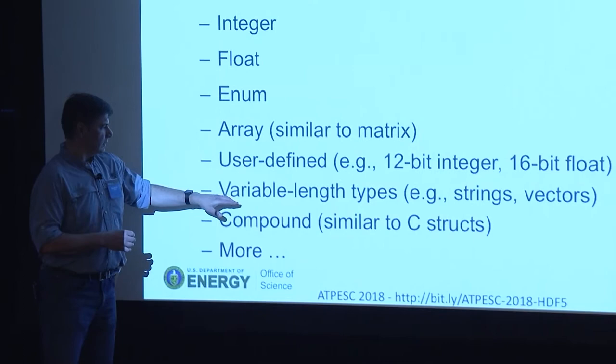A caution about variable-length types: we support them just fine, but it's never been a focus on HPC. They work, but they're slow and not particularly good on HPC systems. If you're thinking of storing a four-gigabyte array of strings, it's probably not a good idea to begin with, and it won't do I/O super fast. For structs, compound types are available.